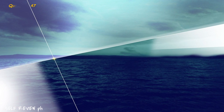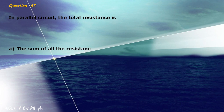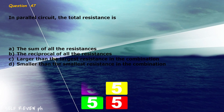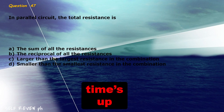Question 47: In a parallel circuit, the total resistance is blank. A) the sum of all the resistances, B) the reciprocal of all the resistances, C) larger than the largest resistance in the combination, D) smaller than the smallest resistance in the combination. The correct answer is letter D, smaller than the smallest resistance in the combination.